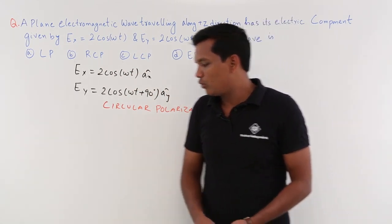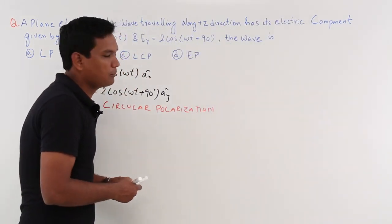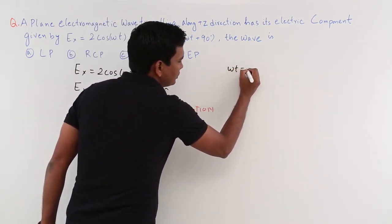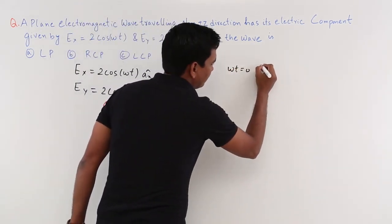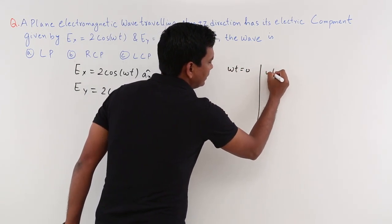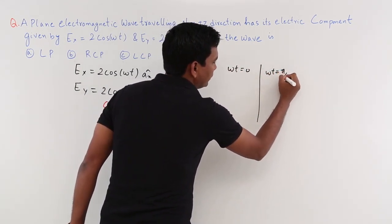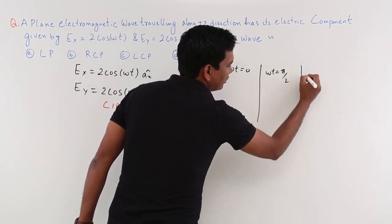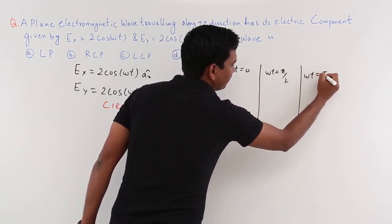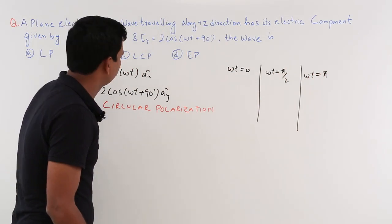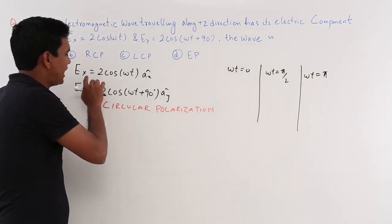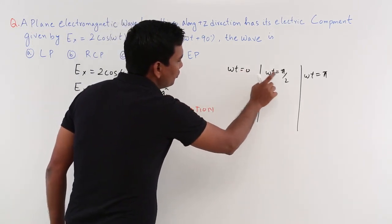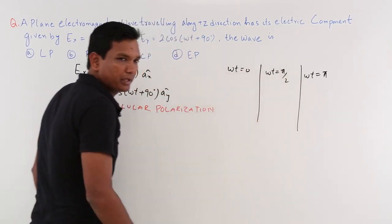To identify which type of circular polarization it is, we will evaluate the values of Ex and Ey at ωt = 0, ωt = π/2, and ωt = π.